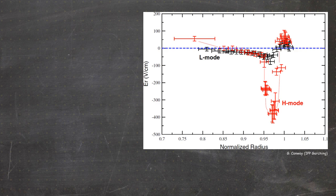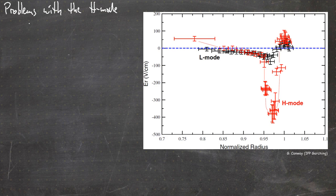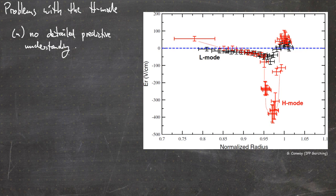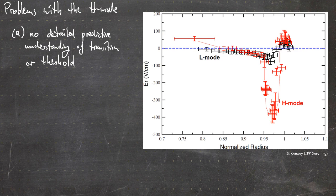There are some problems with the H-mode. Problem A is that there is no detailed predictive understanding of the transition to H-mode or of the threshold to achieve H-mode. This means we cannot fully capture this in modeling. It is more a phenomenological understanding.